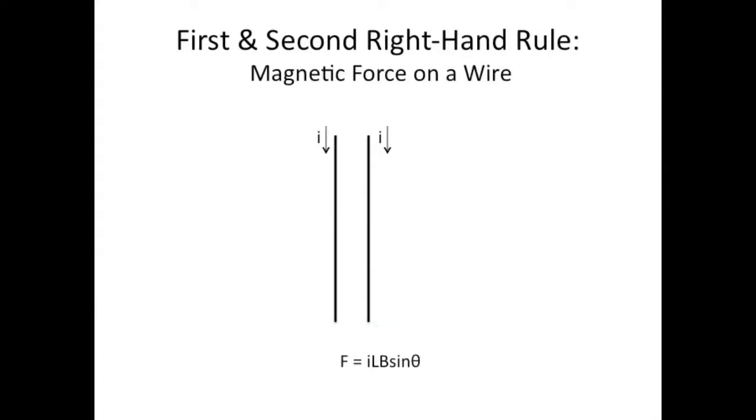Here's another example of combining two rules. A question you might get on the MCAT or in your course involves two current carrying wires next to each other and asks do they repel or do they attract? If you'd like to figure this out on your own, pause the video now as I'm going to explain how to do this.